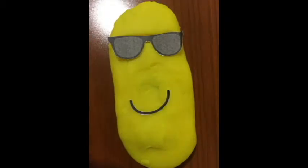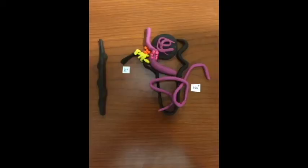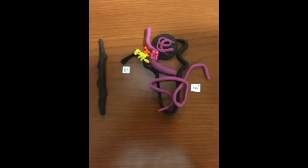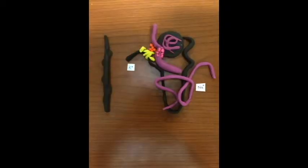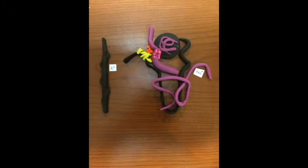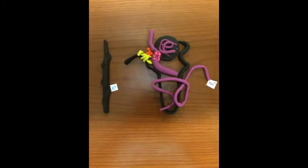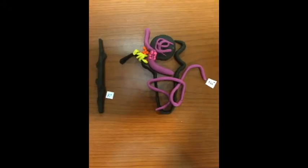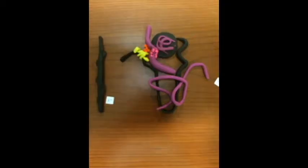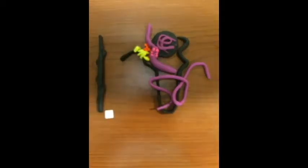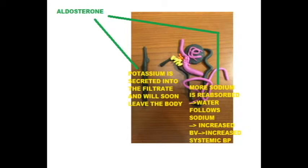Hold up, Giorgio. I'll take it from here. So the aldosterone increases reabsorption of water and ions by altering the permeability of the distal tubules and the collecting ducts. This causes the conservation of sodium, the secretion of potassium, and an increase in water retention. All of this leads to an increase in blood volume, which ultimately increases the systemic blood pressure — otherwise known as the blood pressure throughout your whole body.